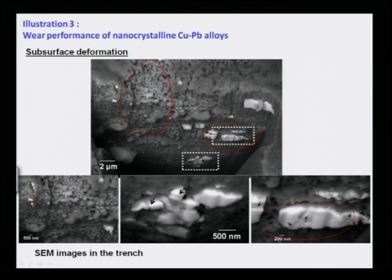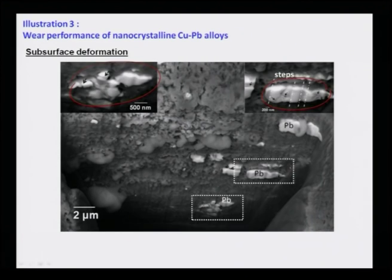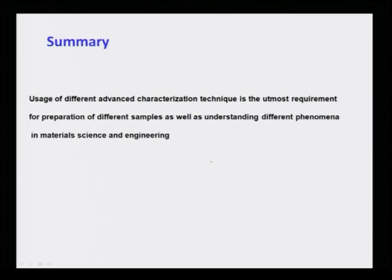To look at sub-surface imaging, focused ion beam (FIB) was used to cut a trench in the wear track. The trench cross-section viewed in SEM shows white lead particles and agglomerated copper grains — some lead particles are fractured with steps formed on their surface, some show sintering, indicating that during wear, temperature rises in the sub-surface region causing sintering, while deformation causes fracturing of lead particles.